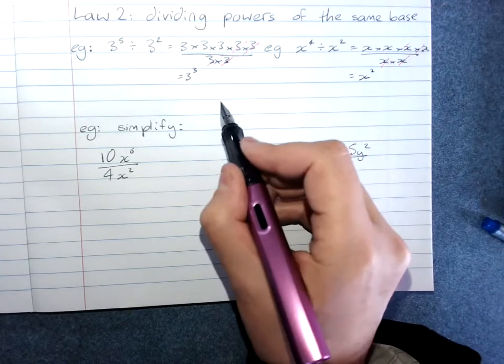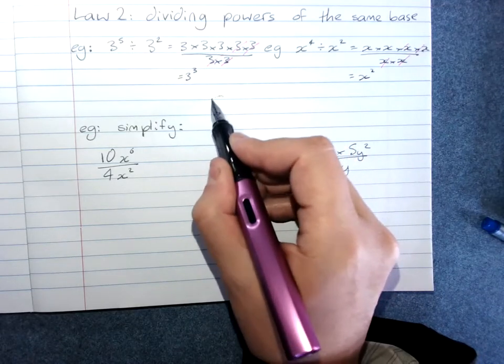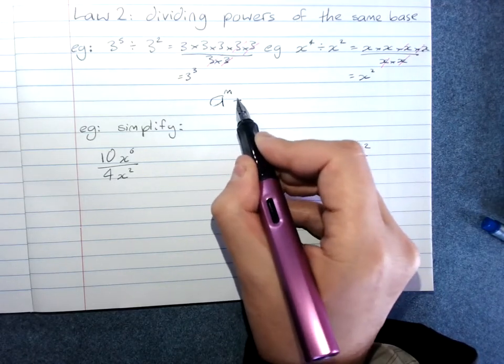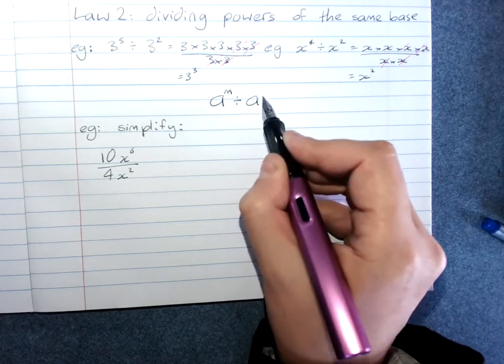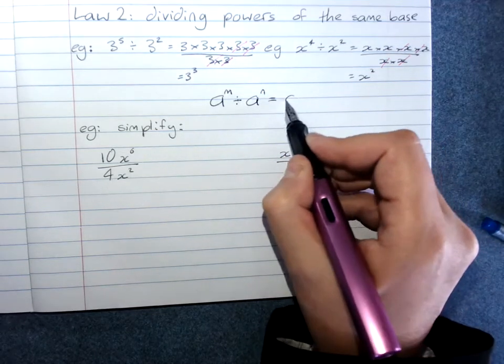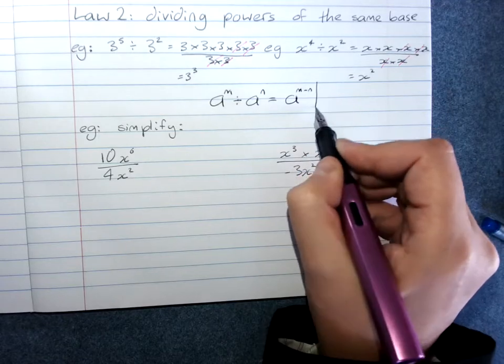And so the algebraic rule here is that a to the power of m divided by a to the power of n. The shortcut is a to the power of m minus n.